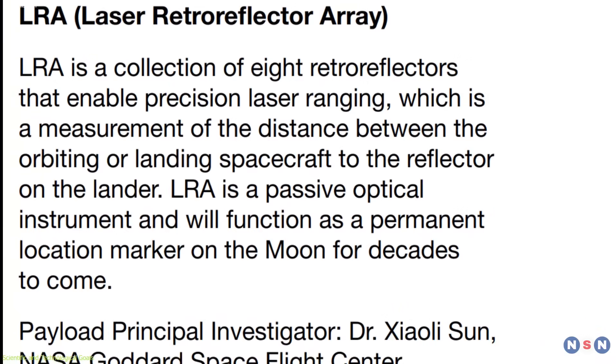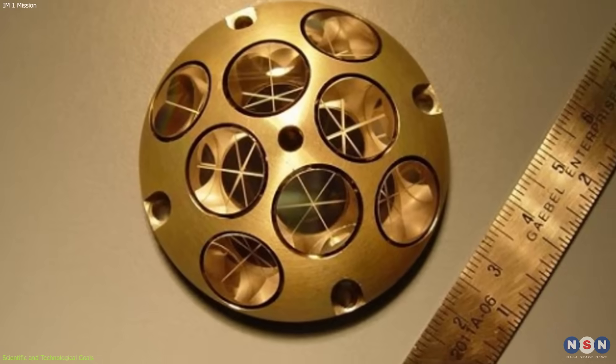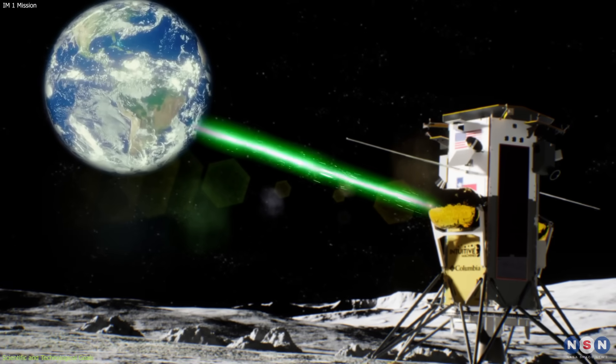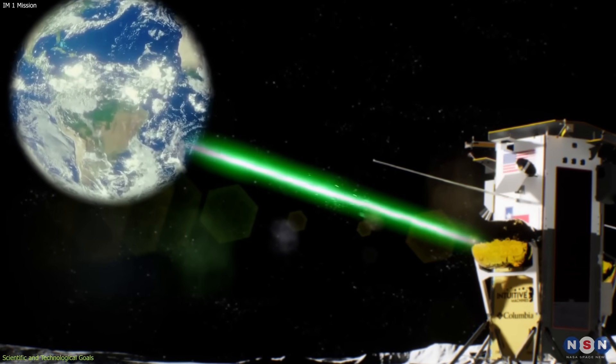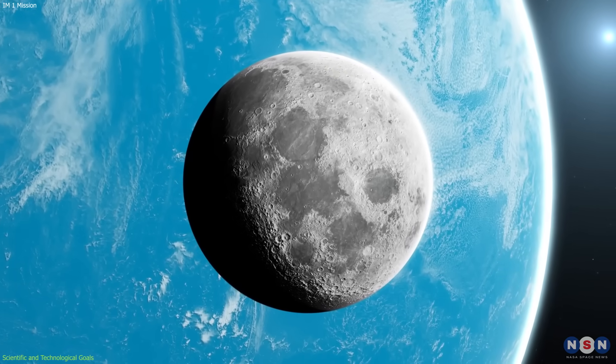The fifth payload is LRA, or Laser Retro Reflector Array, a passive device that will reflect laser beams from Earth or orbiting spacecraft, allowing precise measurements of the lander's location and the lunar orbit and rotation.